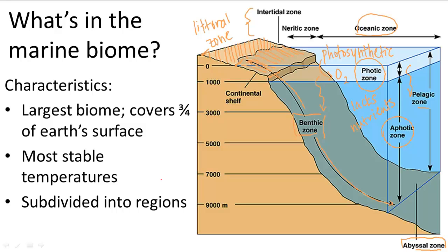As a quick summary: the marine biome is the largest biome, has the most stable temperatures, and is subdivided into regions based on sunlight, distance from land, and water depth.